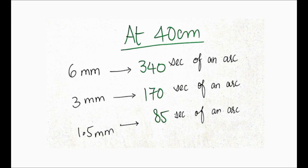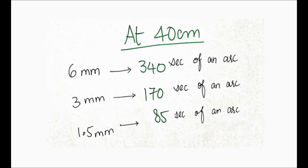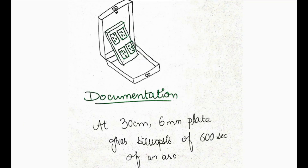The ideal distances are 30 cm and 40 cm, but you can also measure stereopsis up to 80 cm. You have to place the three plates in their respective boxes and ask the patient whether they are able to identify the raised pattern.